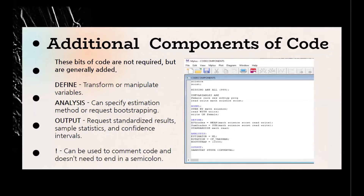These next commands are not required but are generally useful. The define command allows you to transform or manipulate variables; however, variables generated here must also be included in your variable command. For example, you can create an average score, a sum score, or standardize variables. The analysis command lets you specify options such as estimation methods, rotation methods for factor analysis, and you can also request bootstrapping — you also need this command for running descriptive statistics. The output command lets you specify options for your output such as standardized results, sample statistics, confidence intervals, and modification indices.